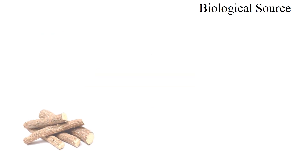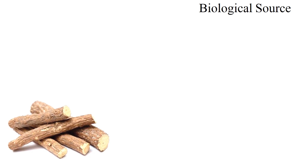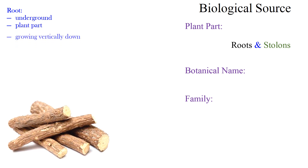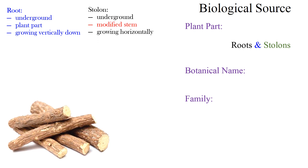We will begin with biological source, covering plant part, botanical name, and family. The plant parts used in case of liquirice are roots and stolons. Root is an underground plant part growing vertically down, whereas stolon is also underground but a modified stem growing horizontally. As per Indian Pharmacopoeia, liquirice is an unpeeled drug, so the plant parts are unpeeled roots and stolons.